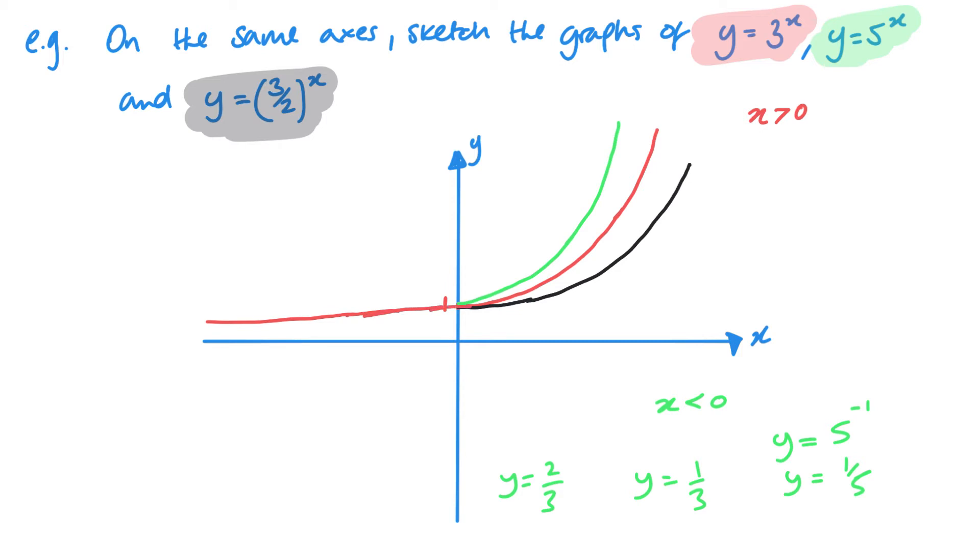I want to generally start with this middle value. I know that my y equals 3/2 to the power x is going to be slightly above that, and y equals 5^x is going to be the one that's below. I should strive to get these so they are heading towards the axes. That's quite simply all I need to do to sketch these.